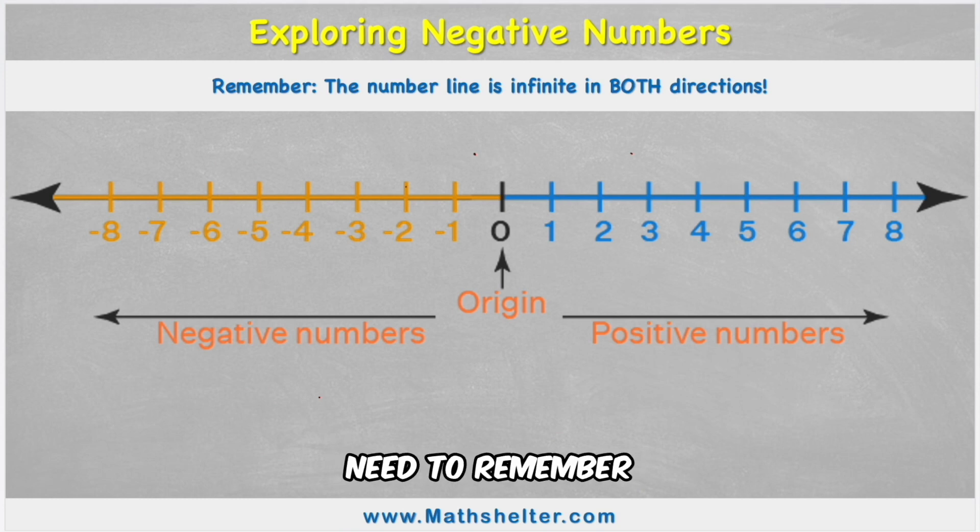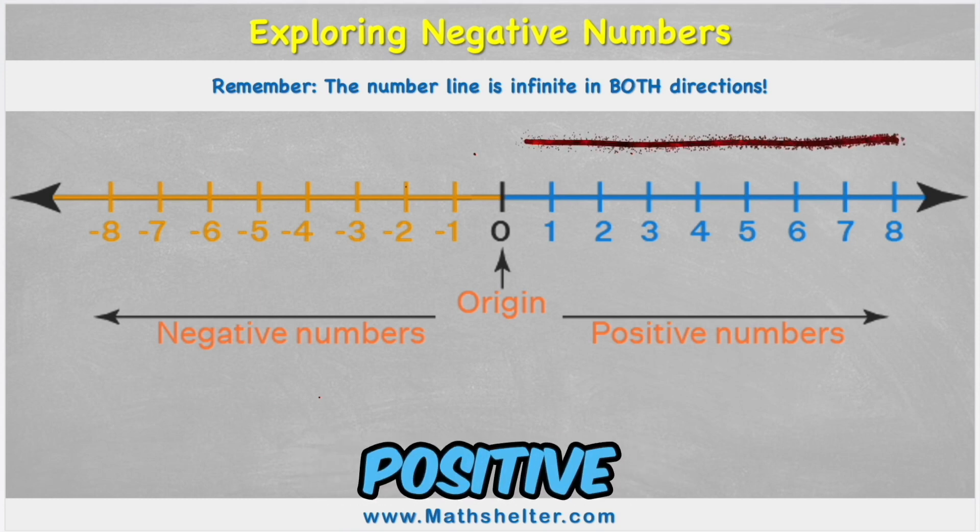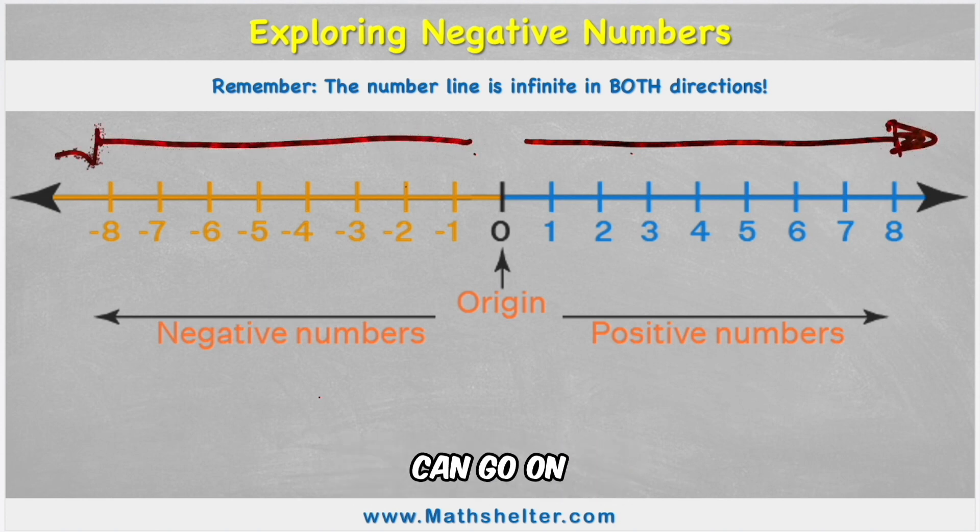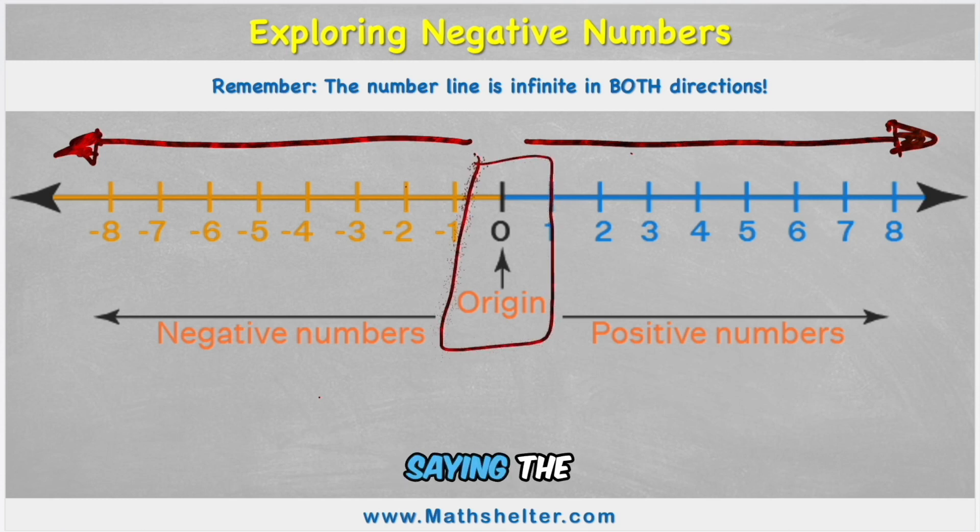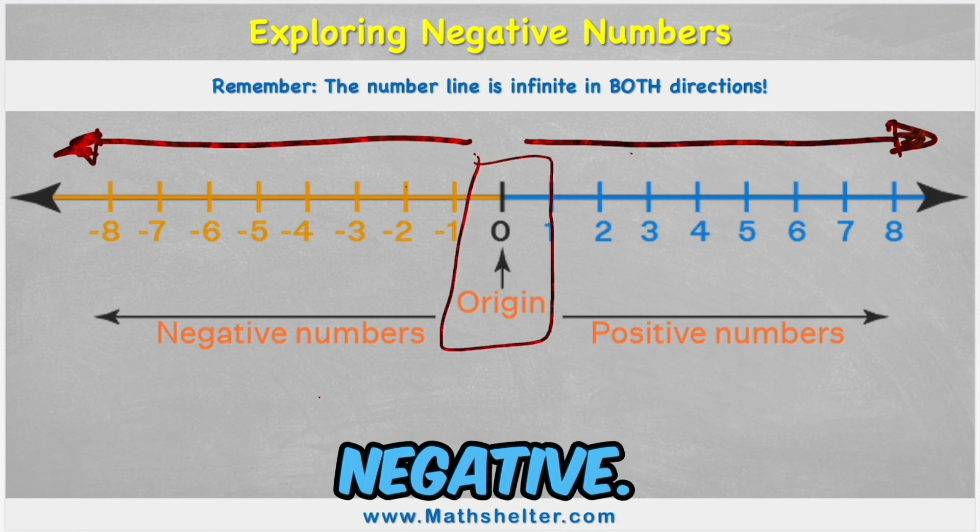So what do we need to remember about negative numbers? Well, we need to remember that both positive and negative numbers can go on forever. We also need to remember that zero is kind of like saying the start. It's the origin. So it's neither positive nor negative.